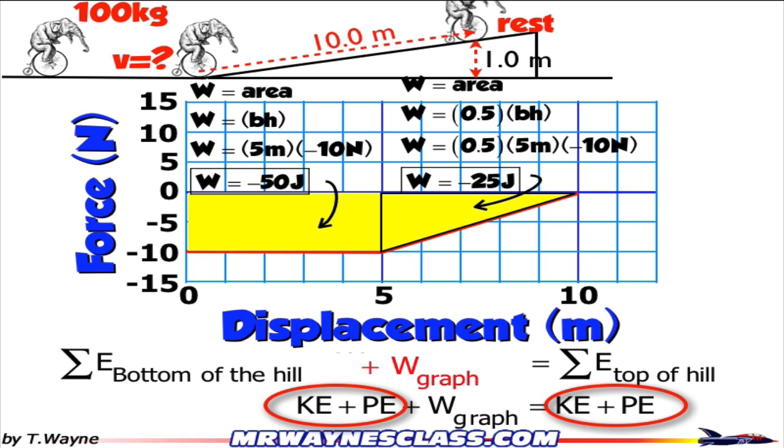At the bottom of the hill, is the elephant moving? Yes, we think so. So I'll keep that energy. At the bottom of the hill, is it above the other location's height? No, it's not above it. So I'm going to get rid of that potential hill energy at the bottom of the hill.